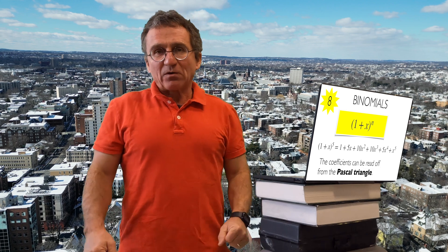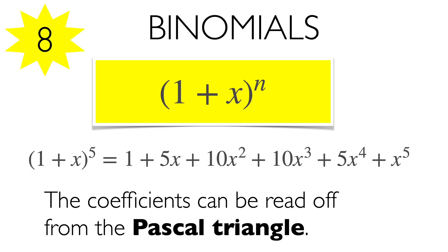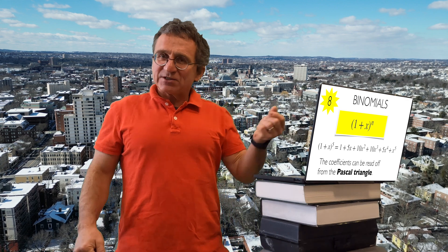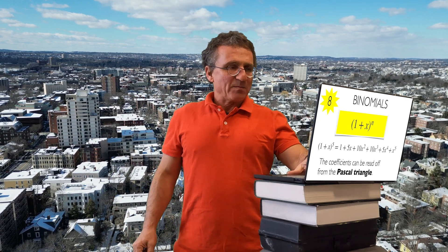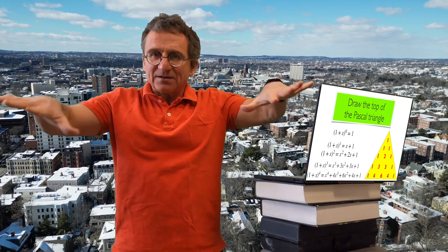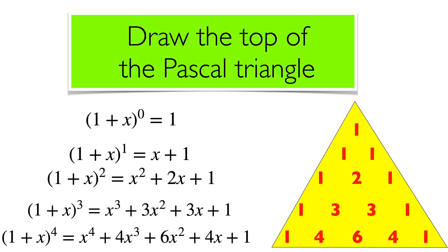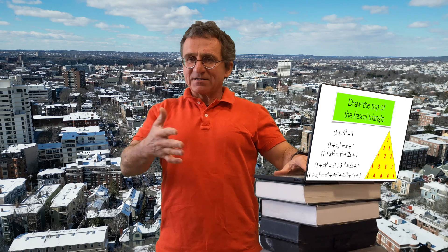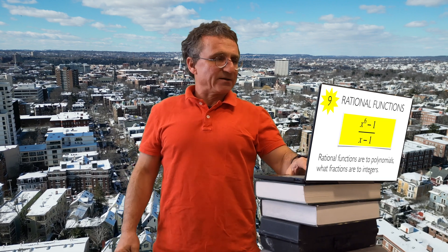Binomials play an important role, also in connection to statistics. For example, how many ways are there to choose three objects from five? The answer is ten, and this is given by the coefficients of the corresponding polynomial. This is related to Pascal's triangle — the first binomial expressions and their coefficients lead to the Pascal triangle.